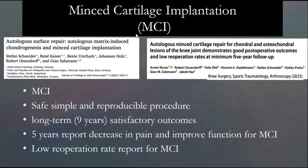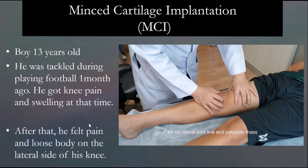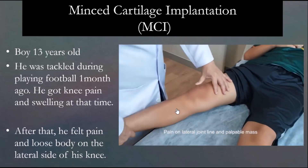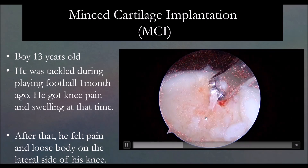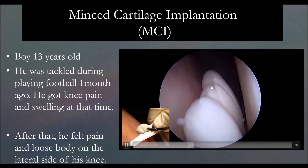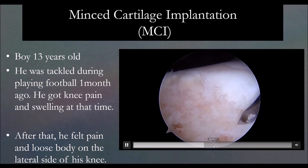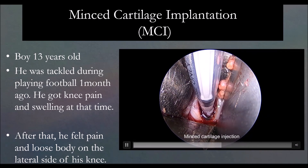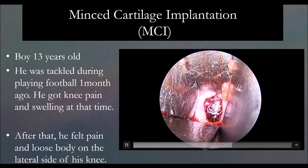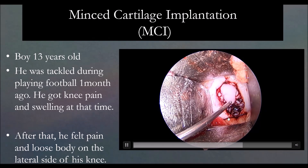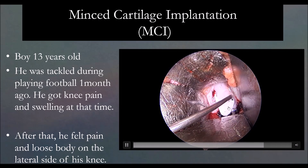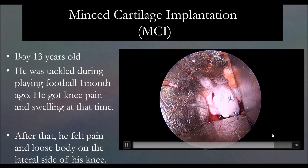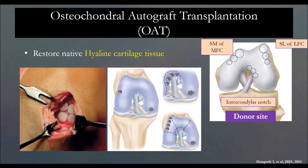Next is minced cartilage implantation — they mince the cartilage and put it into the defect to fill it. For example, a 30-year-old patient with knee pain and locking had a cartilage problem. We found a loose body, removed it, harvested the cartilage from the loose body, minced it, made a mini incision, mixed the cartilage into the defect, filled it, put a scaffold on top, and applied glue over it. The outcome for this technique is pretty good.